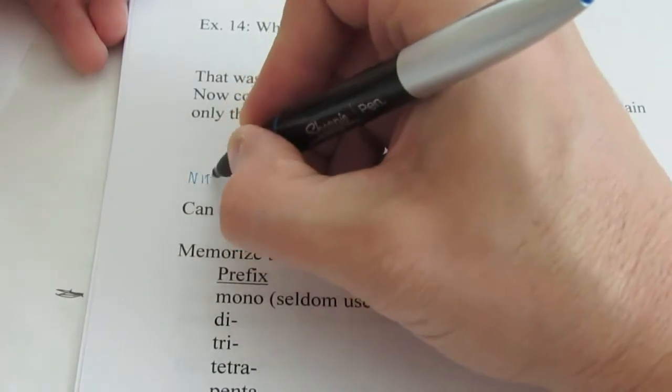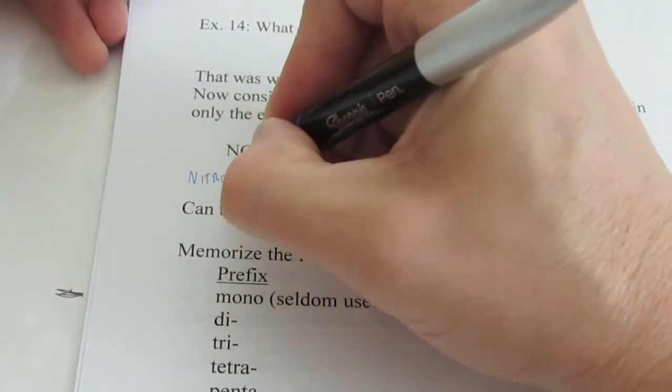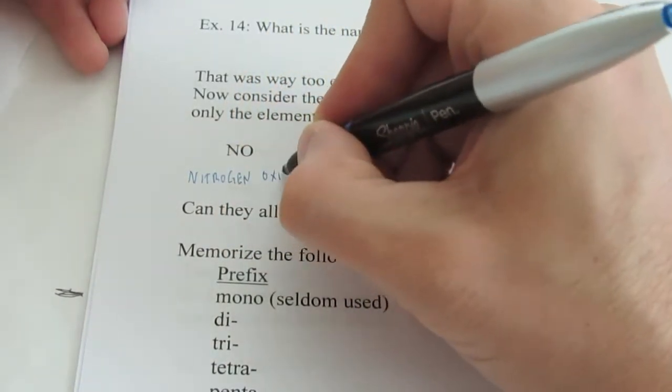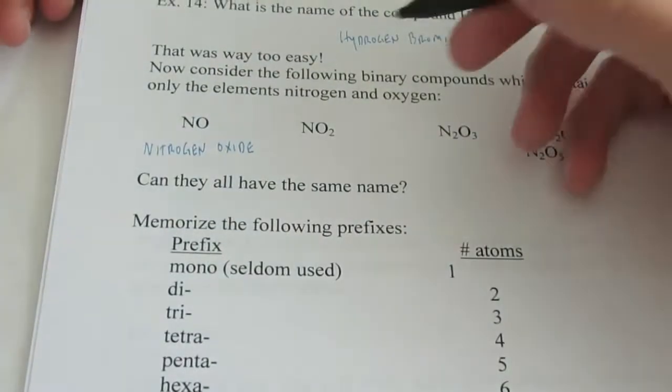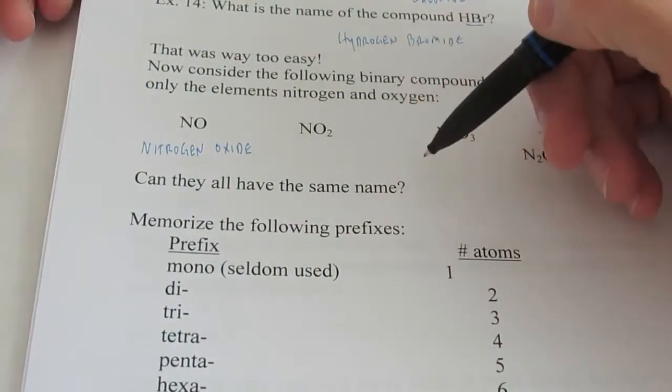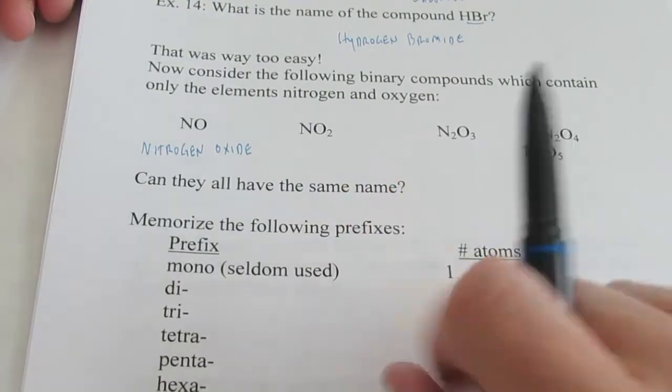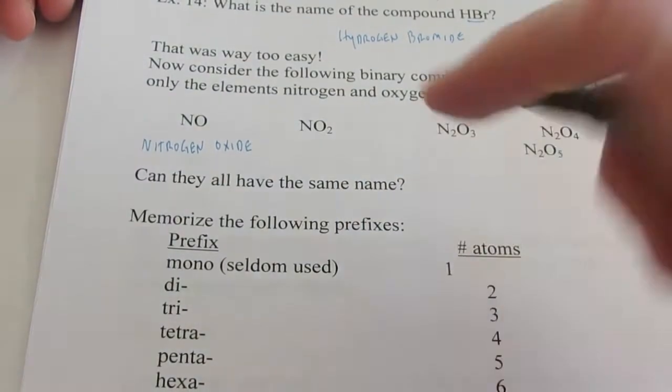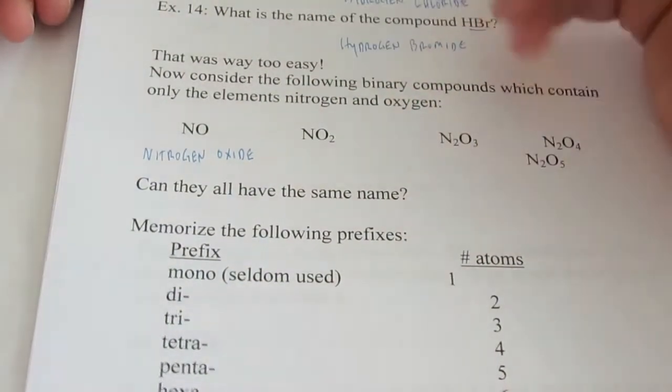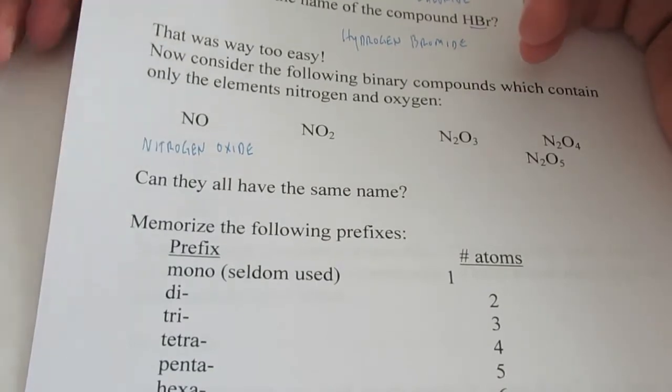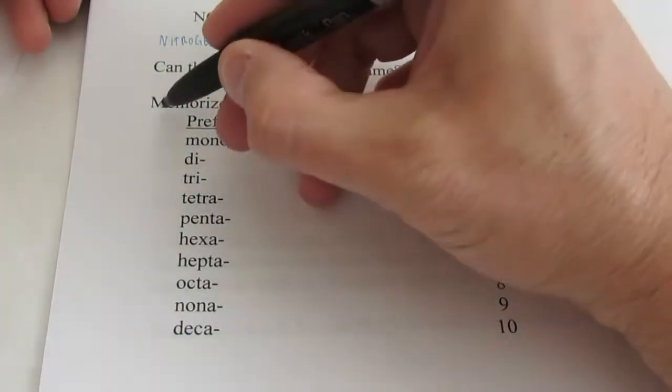But what about NO2? We can't call that nitrogen oxide, and we are not going to use Roman numerals here. So we have to differentiate NO from NO2 in its name. So what you need to do is you need to memorize some prefixes.